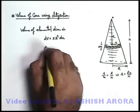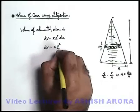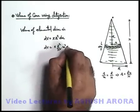If we substitute the value over here, we'll get dV is equal to π(R²/h²)x²dx.